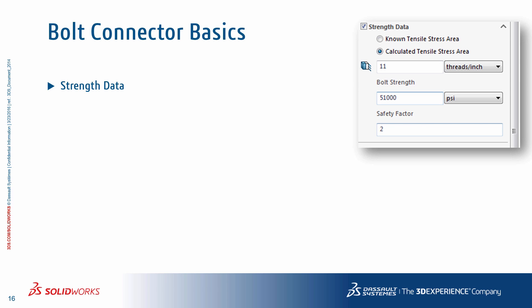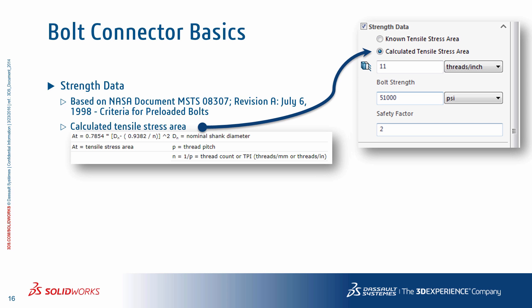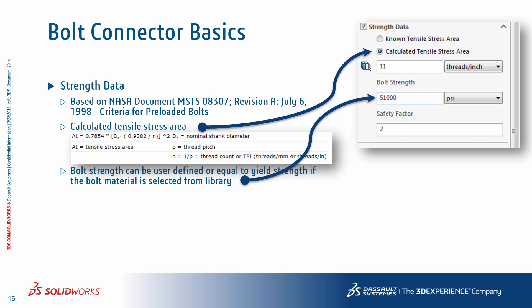One of the powerful options as part of the bolt connector definition is the strength data specification. The strength data option helps determine if the bolt can safely carry the applied loads or is going to fail. The methodology used in SOLIDWORKS Simulation to assess bolt safety is taken from NASA document MSTS 08307. You can input a known tensile area or let the program calculate it based on the bolt shank diameter and thread pitch. The bolt strength can be user defined or equal to yield strength if the bolt material is selected from the library, and this is used for safety factor calculations.